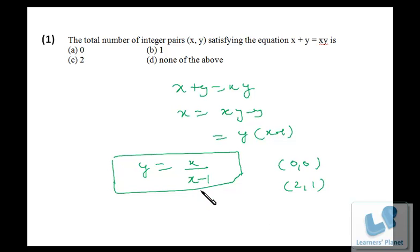If we take any other value of x, x and x - 1 will be consecutive numbers, and all pairs of consecutive numbers are coprime to each other. So we'll be just getting fractions, no integral values will be achieved. So there will be just two solutions for this equation in integers.